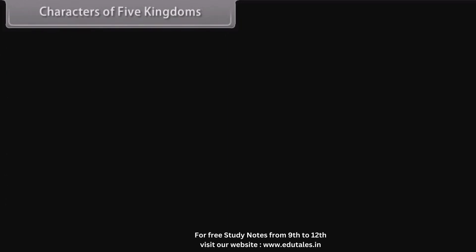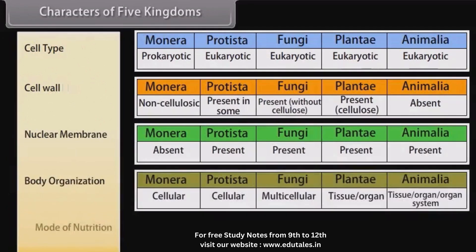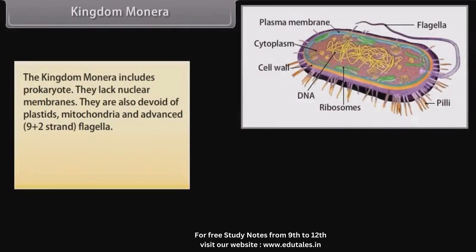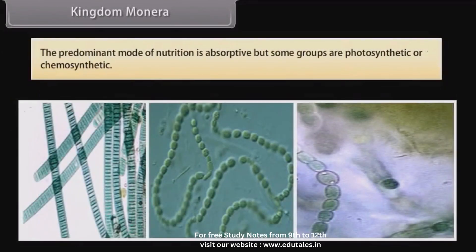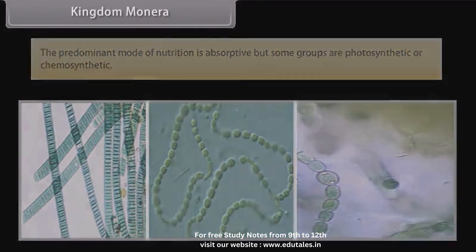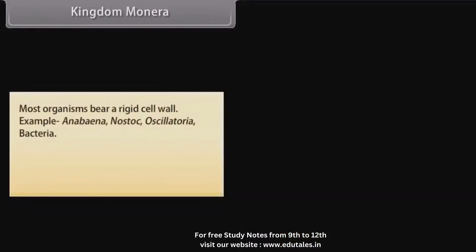The characters of the Five Kingdoms are compared by cell type, cell wall, nuclear membrane, body organization, and mode of nutrition. Kingdom Monera includes prokaryotes. They lack nuclear membranes and are also devoid of plastids, mitochondria, and advanced 9+2 strand flagella. Monera cells are microscopic and typically unicellular. The predominant mode of nutrition is absorptive, but some groups are photosynthetic or chemosynthetic. Reproduction is primarily asexual by fission or budding. Protosexual phenomena also occur. Most organisms bear a rigid cell wall.